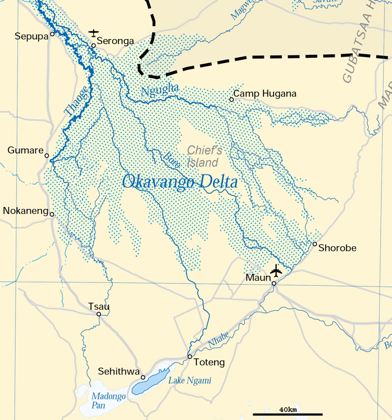The Okavango Delta, or Okavango Grassland, in Botswana is a very large swampy inland delta formed where the Okavango River reaches a tectonic trough in the central part of the Kalahari. All the water reaching the delta is ultimately evaporated and transpired, and does not flow into any sea or ocean. Each year, about 11 km³ of water spreads over the 6,000–15,000 km² area.